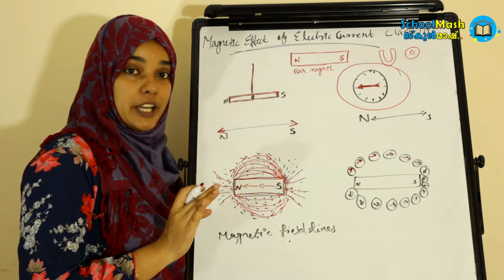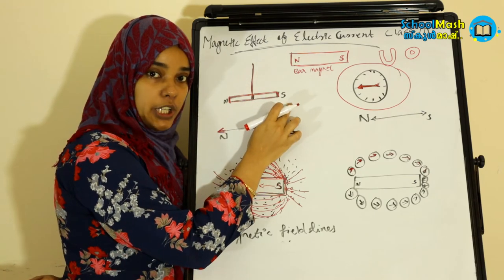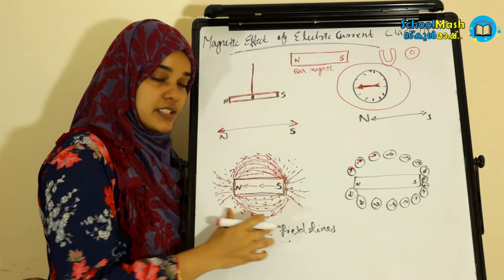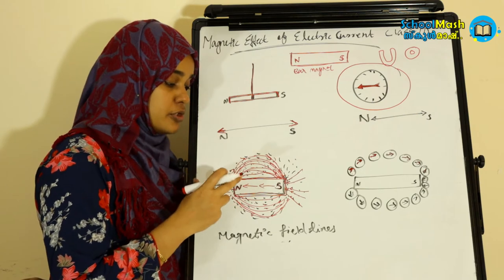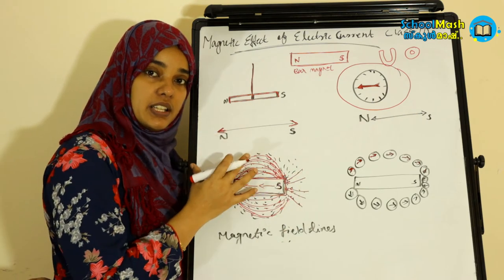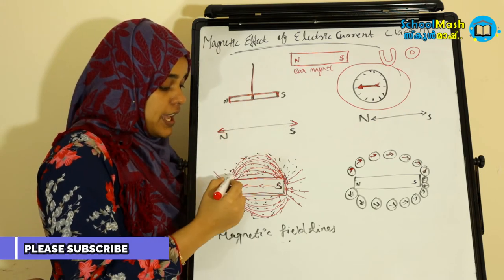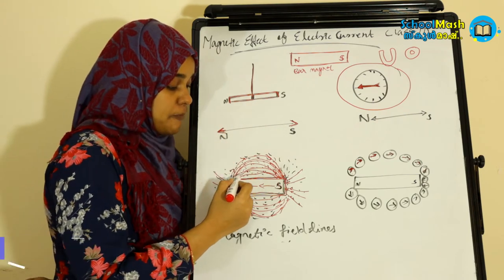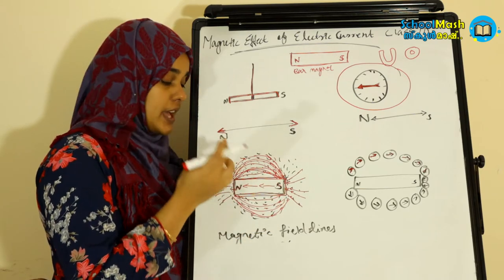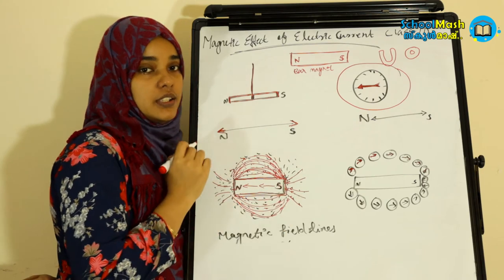So we learned: the magnet has a North Pole and a South Pole. There is a region where we experience magnetic force — that is the magnetic field. For this force, we have magnetic field lines, and the direction of the magnetic field lines externally is from North to South.